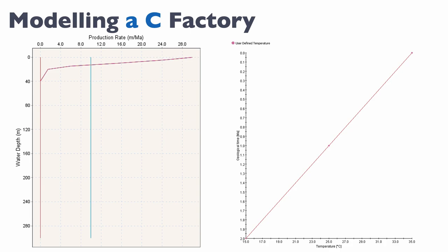In the model I will simulate a couple of million years and I will not maintain temperature constant. I will start with low temperature — below 22 degrees — but temperature will progressively increase. At 1.3 million years we reach the threshold where water temperature becomes 22°C, then keeps increasing up to 25°C. So from 1.3 million years onward there will be T factory production, but before 1.3 million years there will be no T factory in the model.